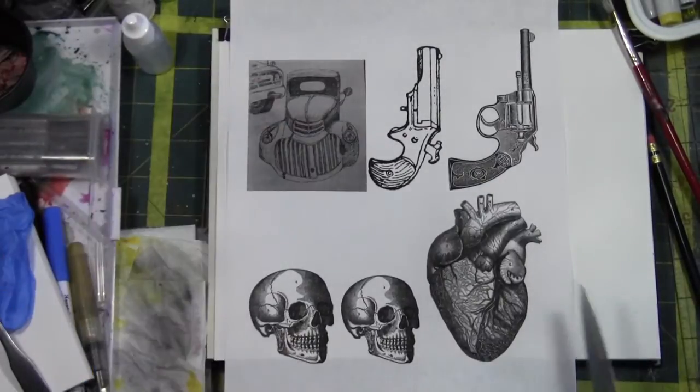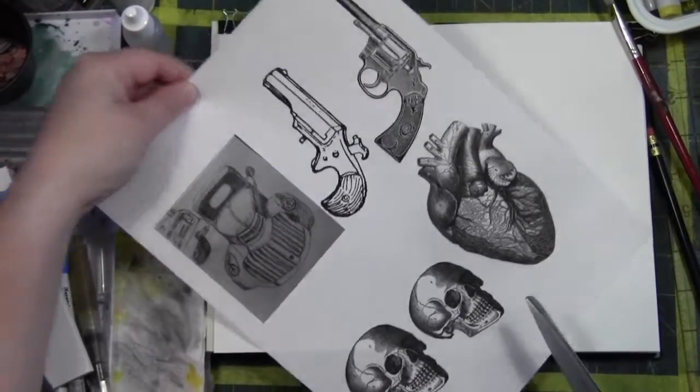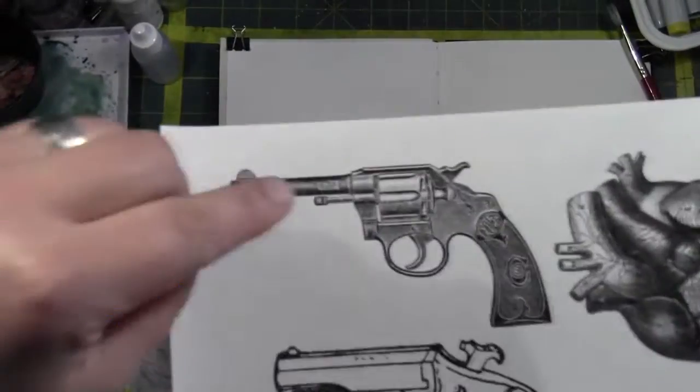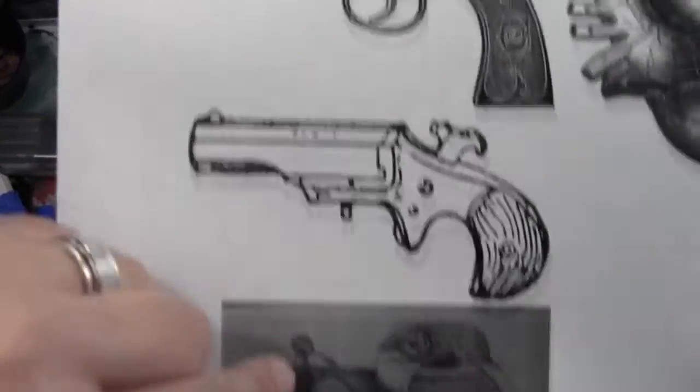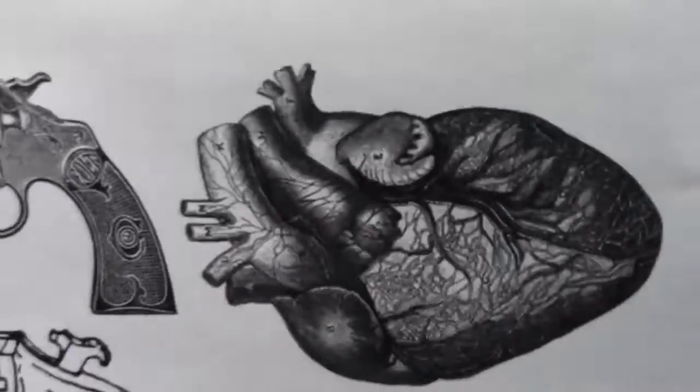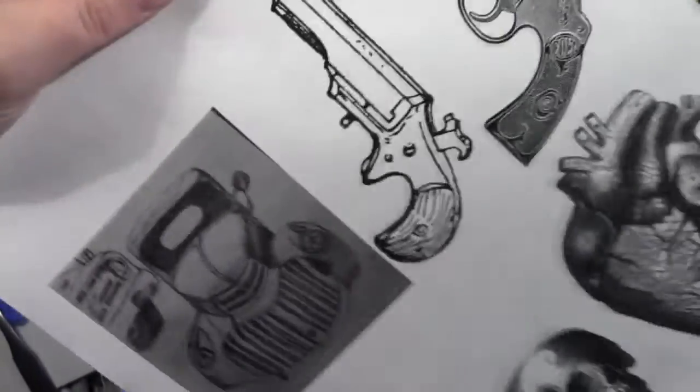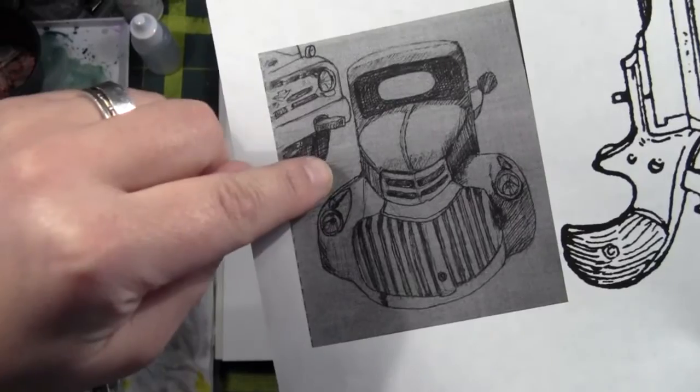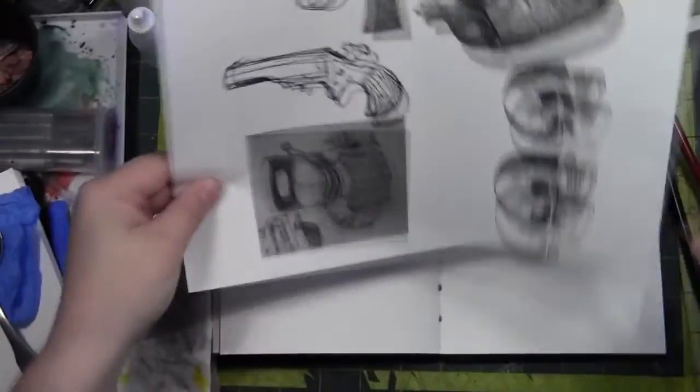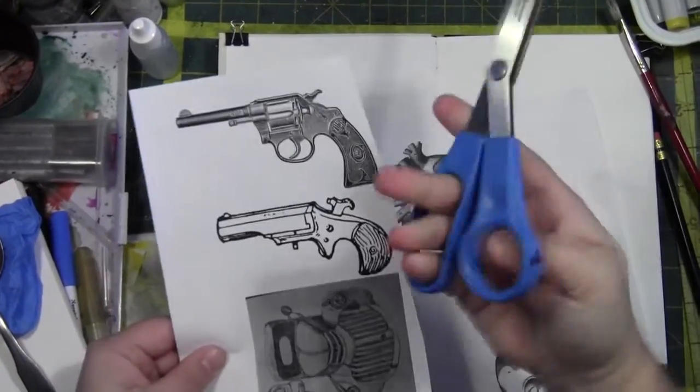You're going to need a pair of scissors to cut apart your print. I did a variety of different things on this print for you to be able to see. I did a crosshatch gun, a line work gun, a medical illustration of a heart, and a few skulls, as well as a drawing of my own. It's a great way to reproduce your own artwork. You can take the scissors and just cut apart the print and pick the stuff that you would like to transfer.